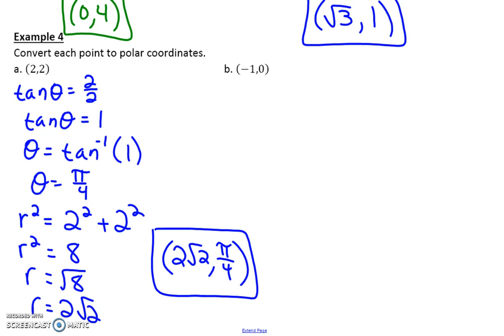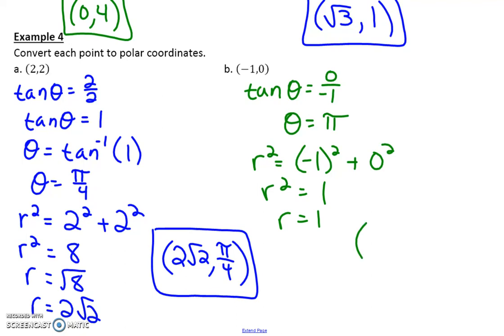Now let's take a look at the very last one. So tangent of theta is equal to 0 over negative 1. Well, you could also look at where is that point. And so hopefully you recognize that that is at pi. And then R squared is equal to negative 1 quantity squared plus 0 squared. So R squared is equal to 1. So R is equal to 1. And so your ordered pair is 1, pi. That is how you can convert from rectangular to polar.